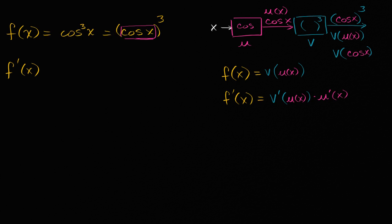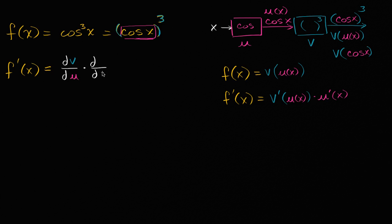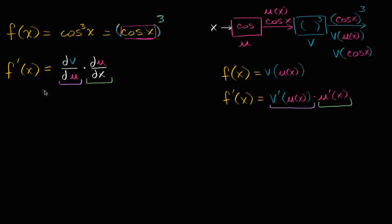So how do we evaluate it in this case? Let me color code it in a similar way. The v function — this outer thing that takes things to the third power — I'll put in blue. F prime of x, written with differential notation, can be viewed as the derivative of v with respect to u, times the derivative of u with respect to x. Those two expressions correspond to v prime of u of x and u prime of x respectively, just using different notations.